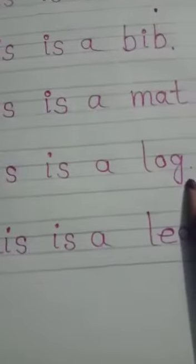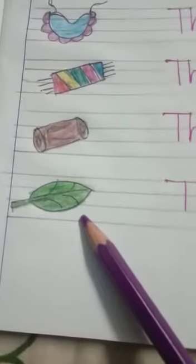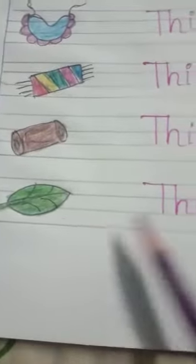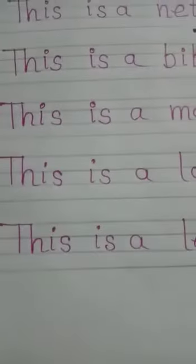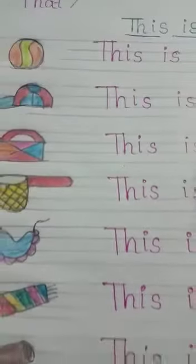This is a log. Log is called a log and the place is called a place. This is a leaf.